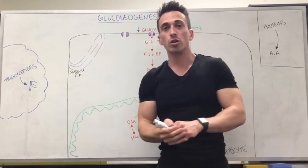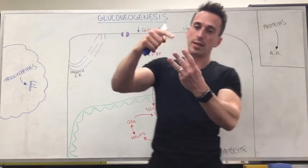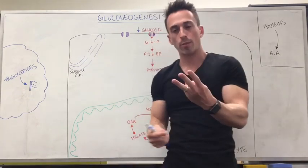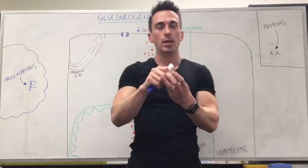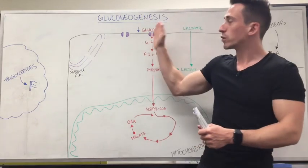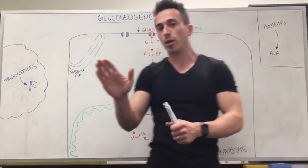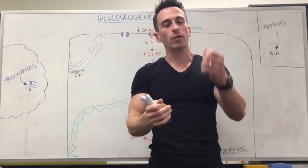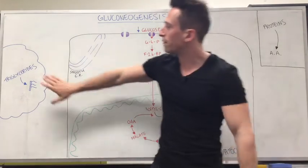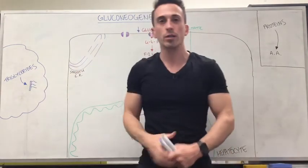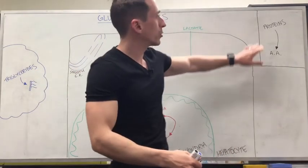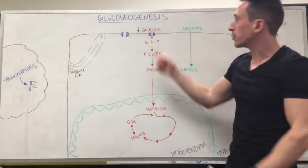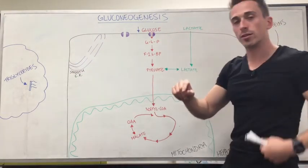Now you know that there are three macronutrients — proteins, fats and carbs — and we make glucose primarily from carbs. So if we were to make glucose from non-carbohydrate based sources, that's basically making it from the proteins and the fats. So we've got the fats over here as triglycerides, we've got the proteins over here, and we're going to talk about how they can come in to produce glucose.